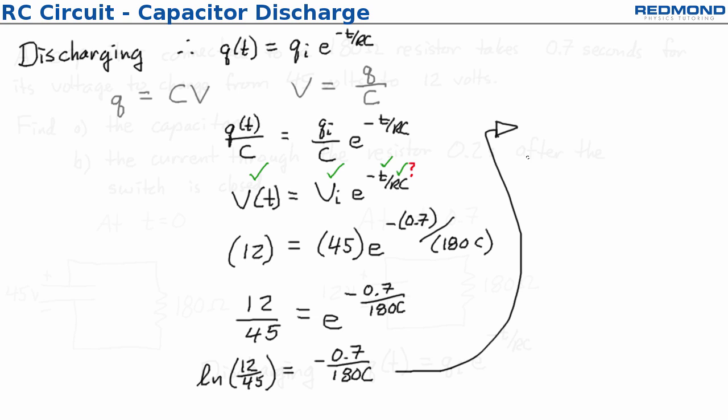ln of 12 over 45 works out to negative 1.32 and I keep a few extra sig figs just because I'm often working on WebWork problems that are online and it's actually extremely picky about the significant figures. So while I'm doing the calculations for intermediate calculations I tend to keep more sig figs.